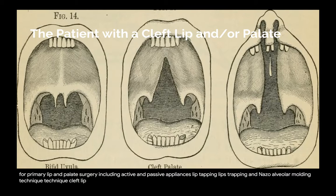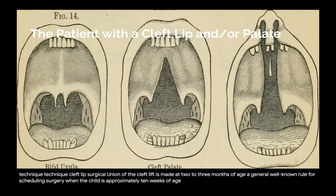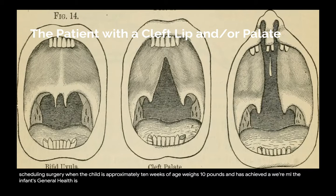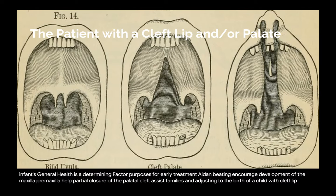Cleft lip: surgical union of the cleft lip is made at two to three months of age. A general well-known rule for scheduling surgery is when the child is approximately 10 weeks of age, weighs 10 pounds, and has achieved a serum hemoglobin of 10 mg/mL. The infant's general health is a determining factor. Purposes for early treatment include: aiding in feeding, encouraging development of the maxilla and pre-maxilla, helping partial closure of the palatal cleft, and assisting families in adjusting to the birth of a child with cleft lip and/or palate.